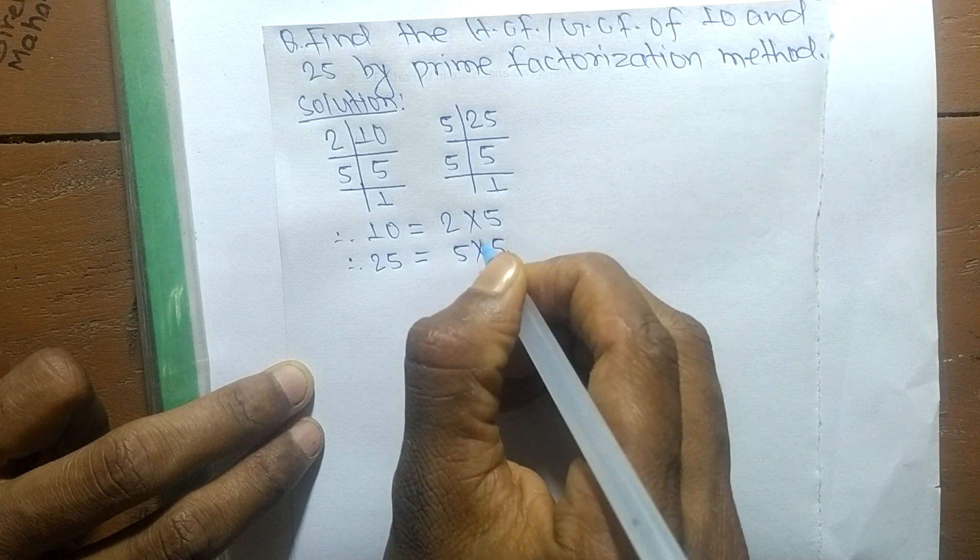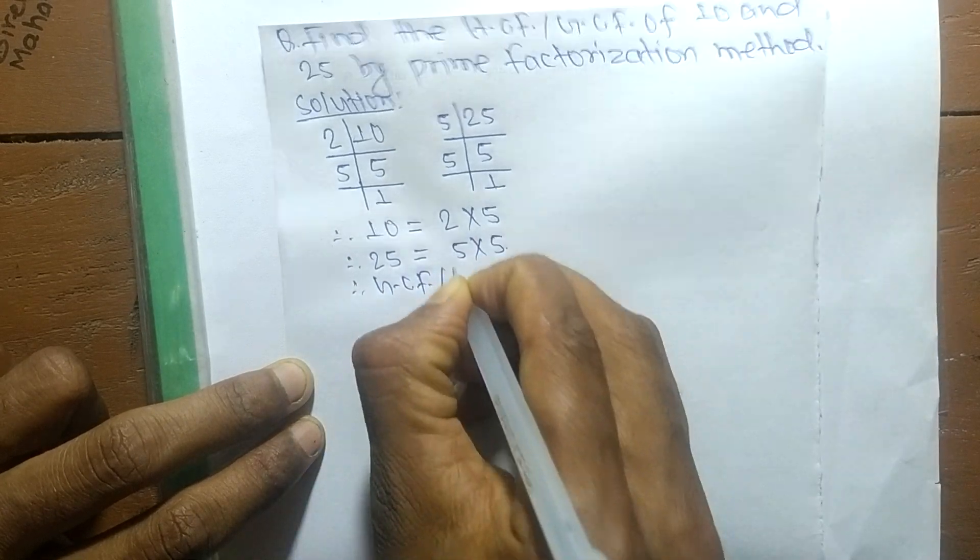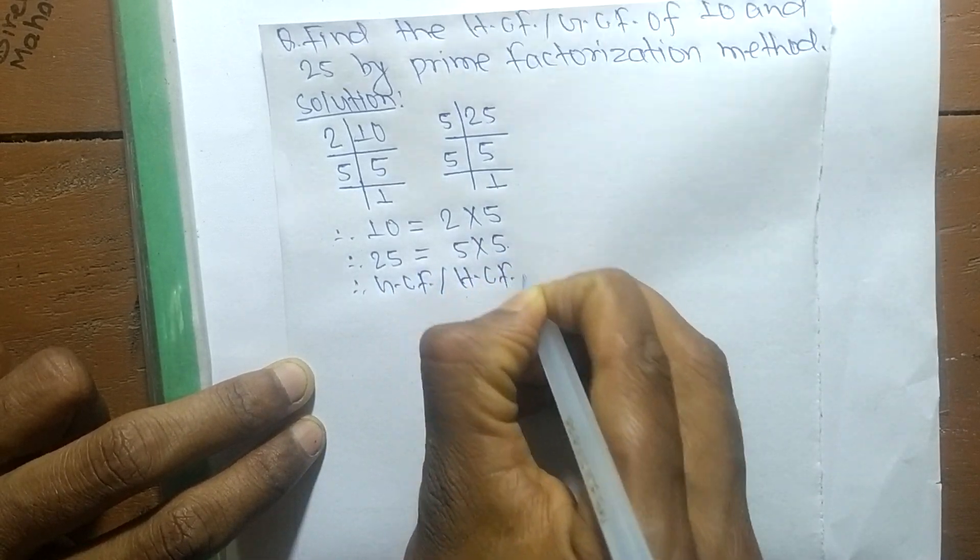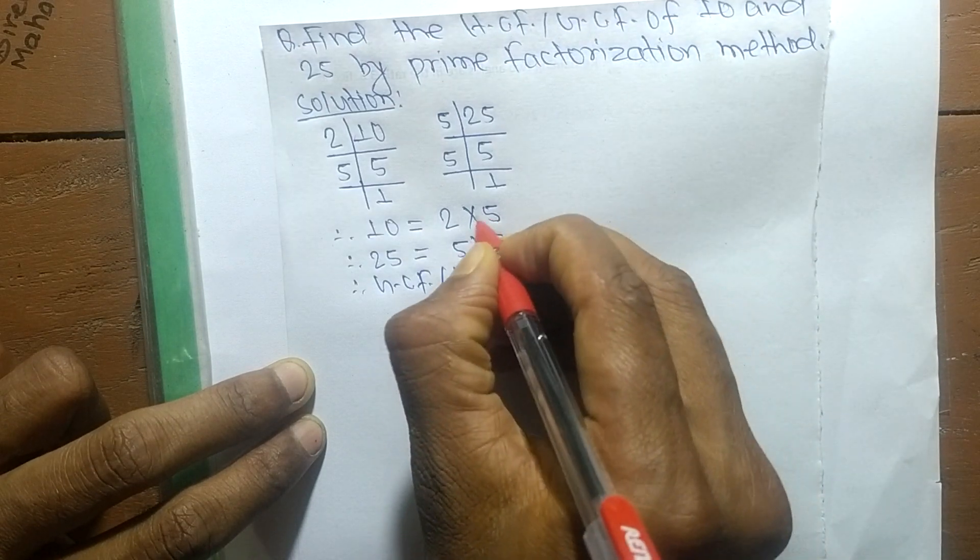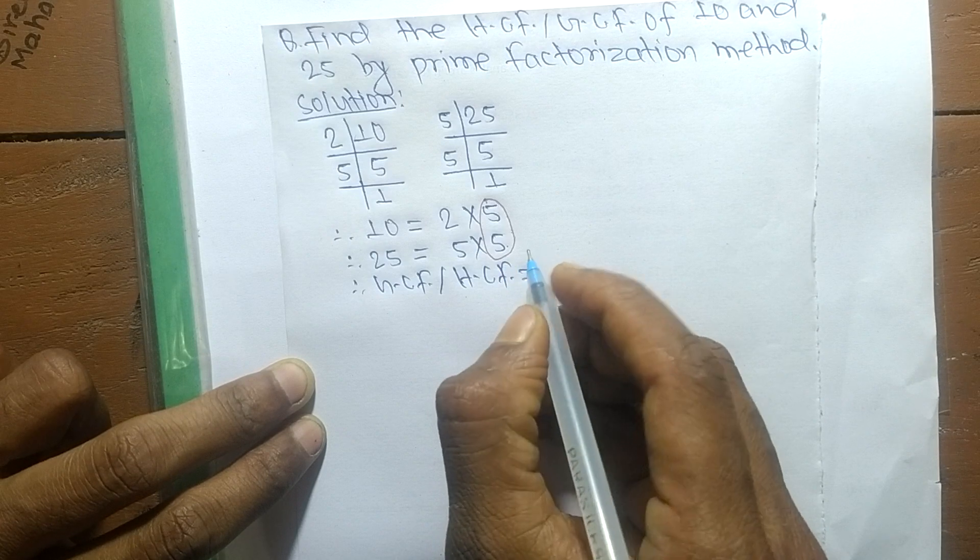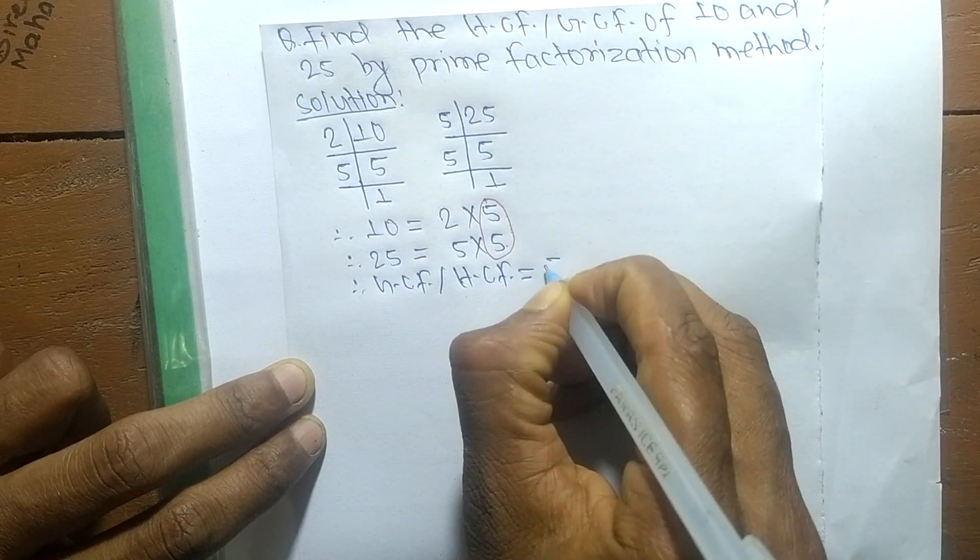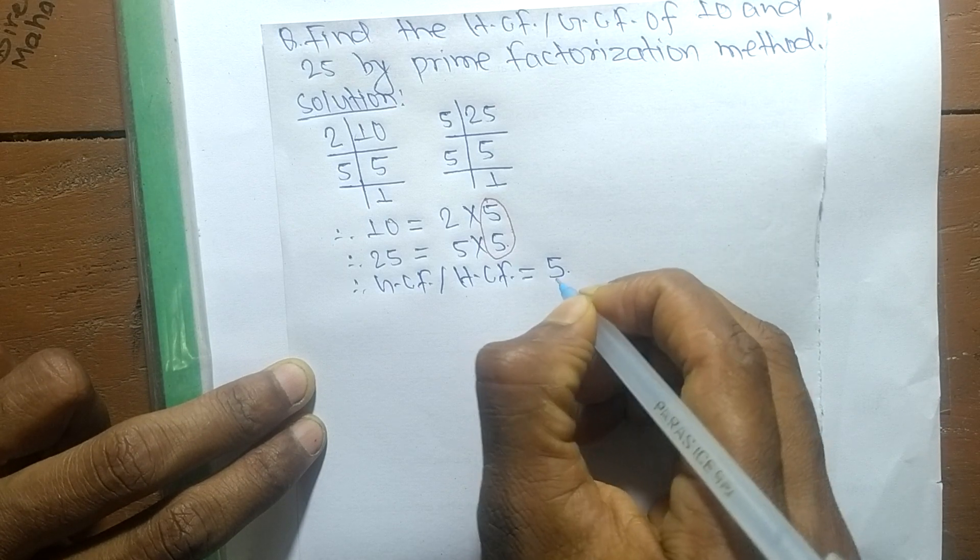So GCF or HCF is equal to the common elements in both. Here it is 5. So 5 is the only common number here, so GCF or HCF is equal to 5.